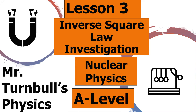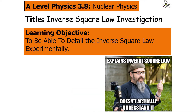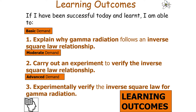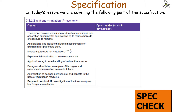Hello and welcome to the following lesson on the inverse square law investigation, which is part of the AQA A-level nuclear physics topic. In today's lesson we're going to look at detailing the inverse square law experimentally. If we've been successful, we should be able to explain why gamma radiation follows an inverse square law relationship, carry out an experiment to verify it, and experimentally verify the inverse square law for gamma radiation.